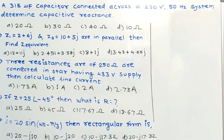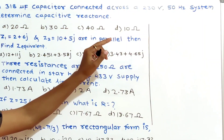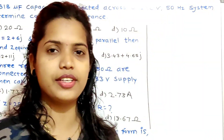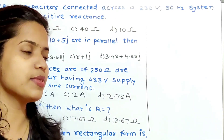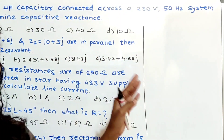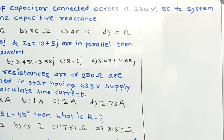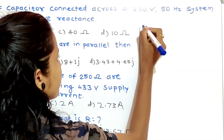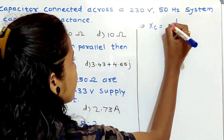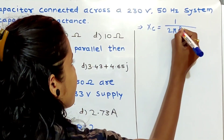For problem number one, we have to find capacitive reactance. Inductive reactance is XL and capacitive reactance is XC. The formula for XC is equal to 1 upon 2π fc. So XC equals 1 upon 2π fc.